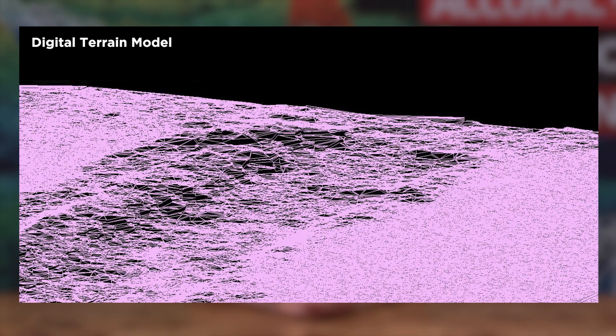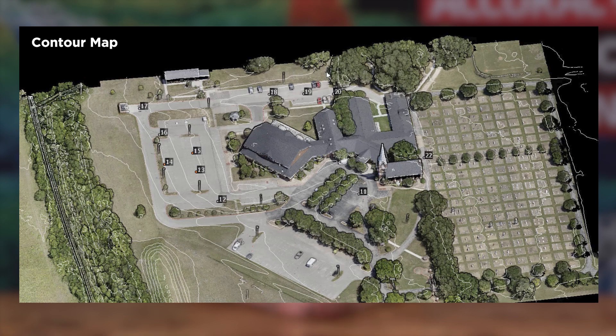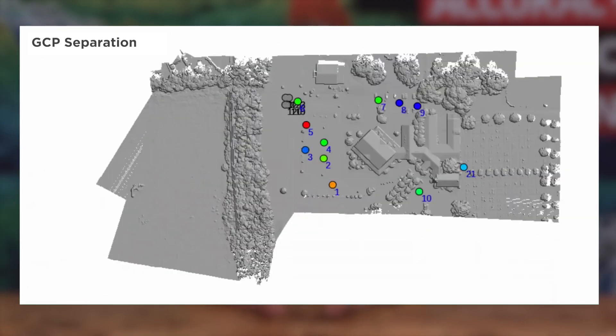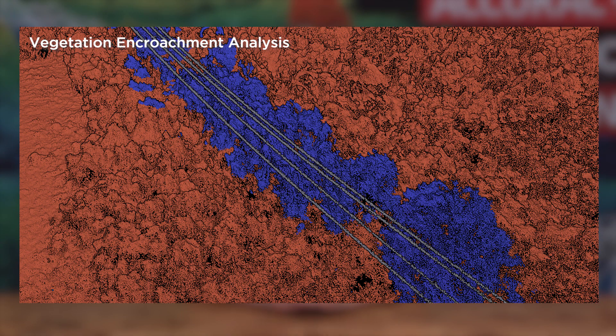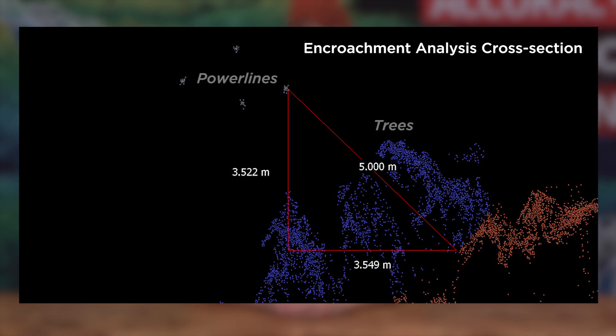Once you have an optimized, colorized, and classified point cloud, the sky's the limit with the accurate 3D models and data derivatives you can create. Some of these deliverables include raster or vector data products like digital elevation models and contour maps. Other derivatives such as canopy height models, intensity maps, volume calculations, and vegetation encroachment analysis are also frequently used to gain critical spatial awareness and drive business intelligence.